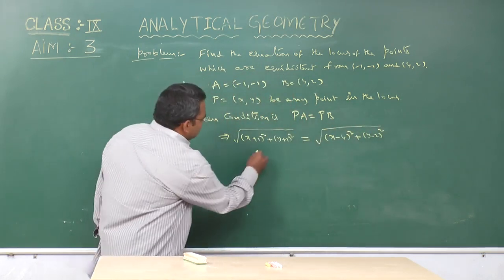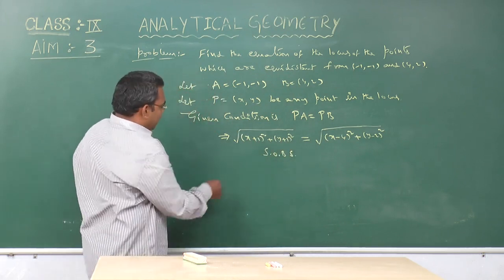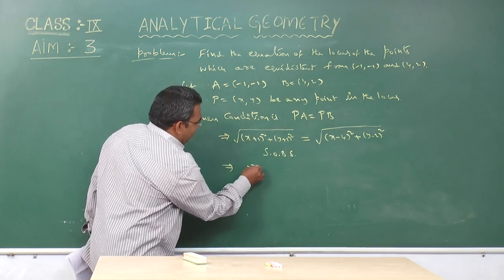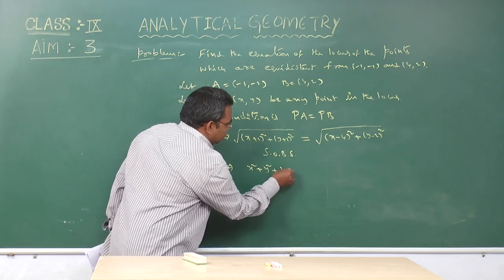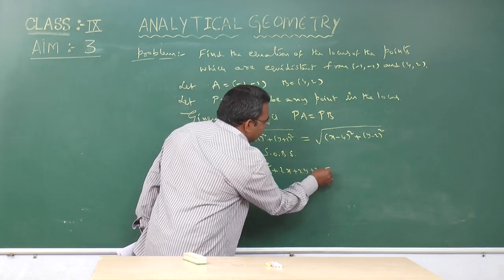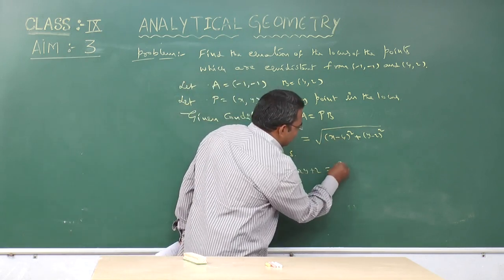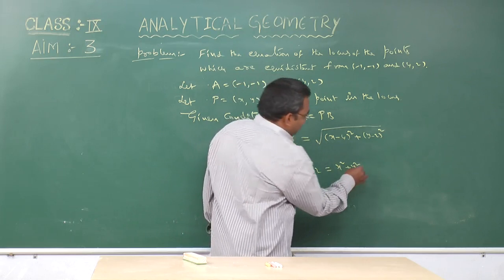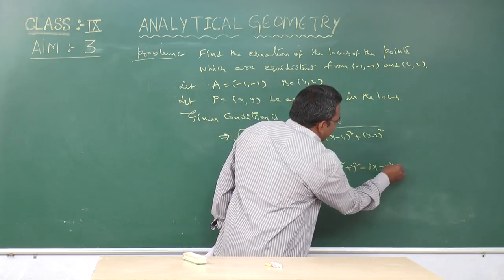Now, squaring on both sides, that implies x² + y² + 2x + 2y + 2 equals x² + y² - 8x - 4y + 20.